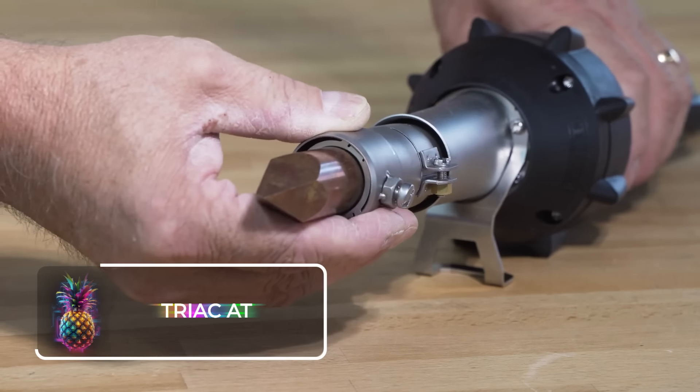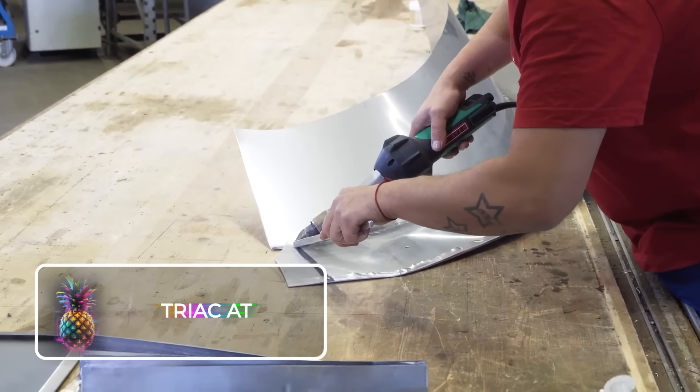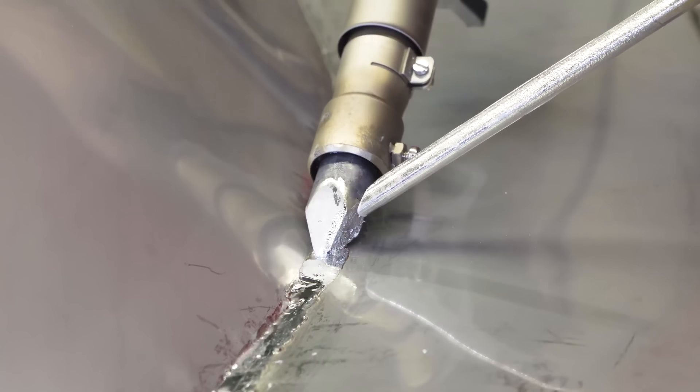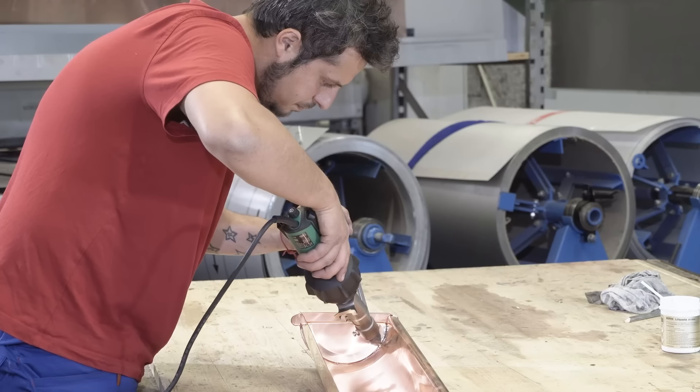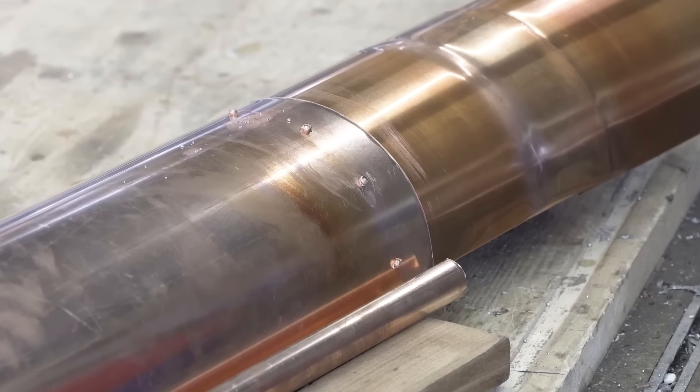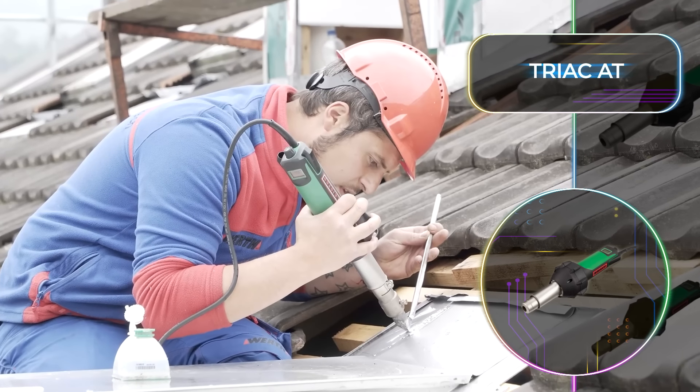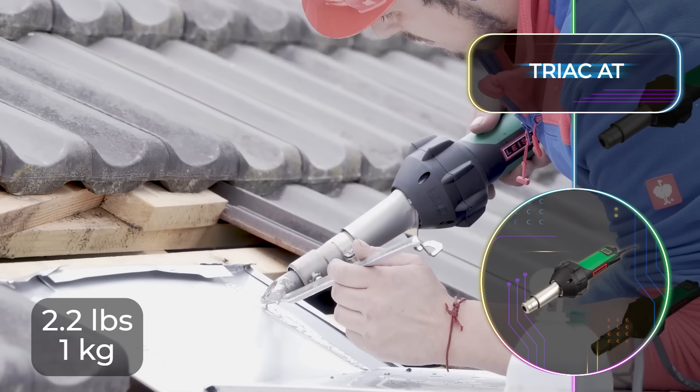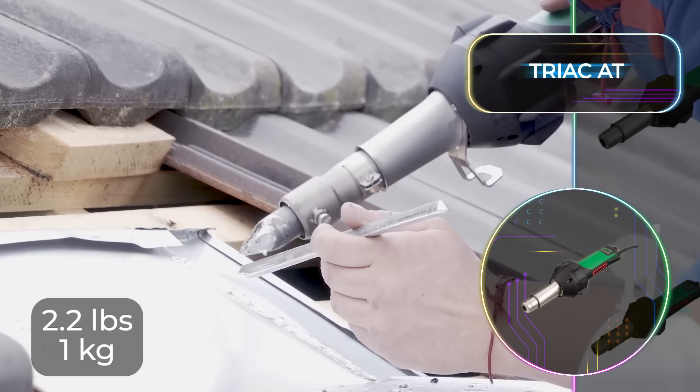Triac At. The Swiss have done it again with yet another remarkable tool for the construction industry. This tool is especially valuable for professionals who find themselves handling copper, chrome, and zinc often. Meet the first soldering kit that's totally gas-free and flameless. It's called the Triac At, and it's not just easier to use, it's better for the environment too. It weighs just 2.2 pounds or one kilogram and fits easily into your tool kit.